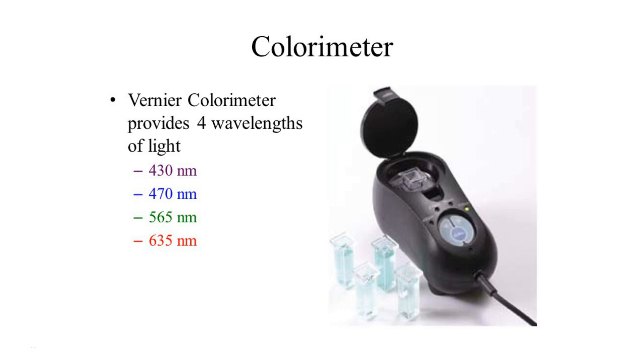Here's what the colorimeter looks like. This is a colorimeter made by Vernier, and the colorimeter we use has four different wavelengths to select from, ranging from 430 all the way up to 635 nanometers. The light shines through the cuvette, and the photoreceptor detects how much light passes through the sample.